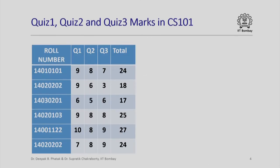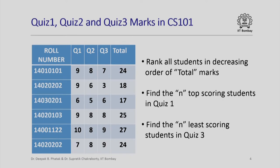Here is a simple example. Let us say in a table or spreadsheet I have listed the quiz 1, quiz 2, and quiz 3 marks of several students taking CS 101. Each entry represents marks of a particular student in a particular quiz, and we have added up all of these marks to get the total mark. Given this table, one might ask: can we rank the students by roll number in decreasing order of total marks? Or find the top n scoring students in quiz 1, or find the n least scoring students in quiz 3, where n could be user-specified.